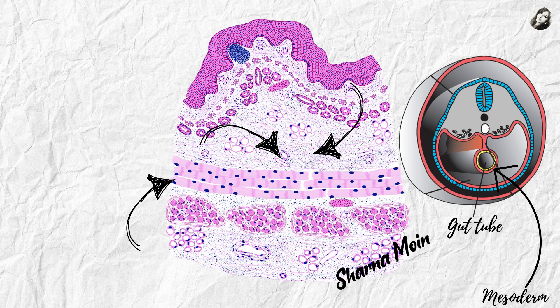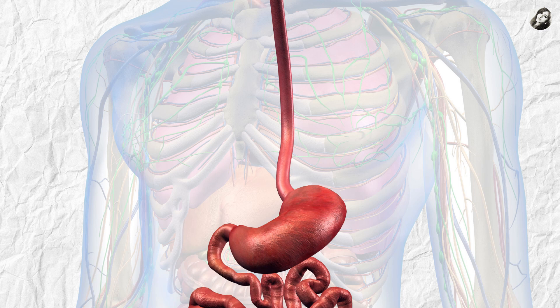Specifically, it is a part of the lateral plate mesoderm. The lateral plate mesoderm has two layers: the visceral layer, which surrounds the viscera, and the parietal layer, which lines the body wall. All structures of the esophagus — except the lining epithelium and the cells of the esophageal glands — are derived from the visceral layer of the lateral plate mesoderm, not from the parietal layer.